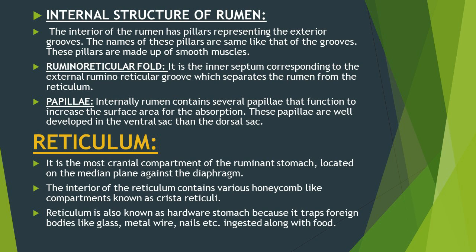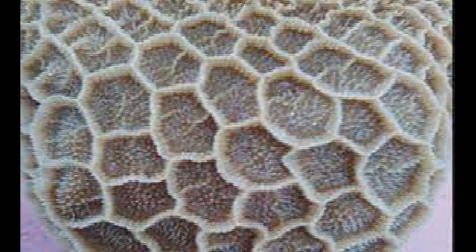Reticulum is present against the diaphragm at its caudal aspect, and is the most cranial compartment of the ruminant stomach. It is located on the median plane of the body because the lateral wall of the abdominal cavity is occupied by the rumen. The interior of the reticulum contains honeycomb-like compartments called crystal reticuli, which also contain papillae. The other name for reticulum is hardware stomach because it traps foreign bodies like glass pieces, metal wires, and nails ingested along with food.